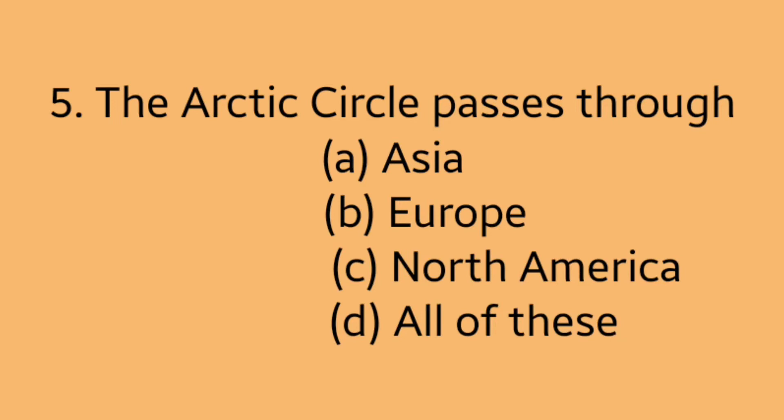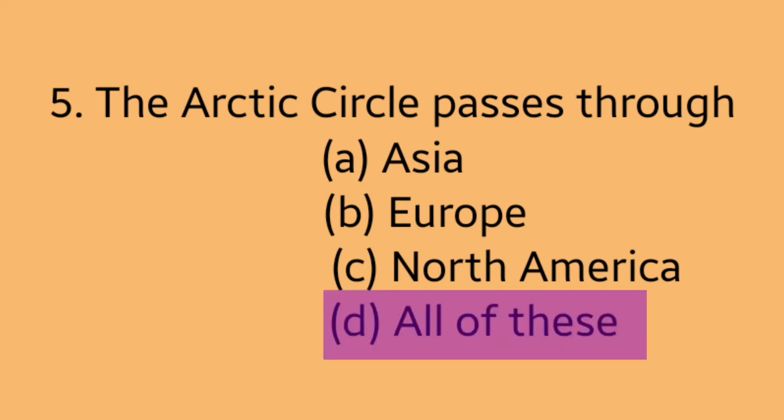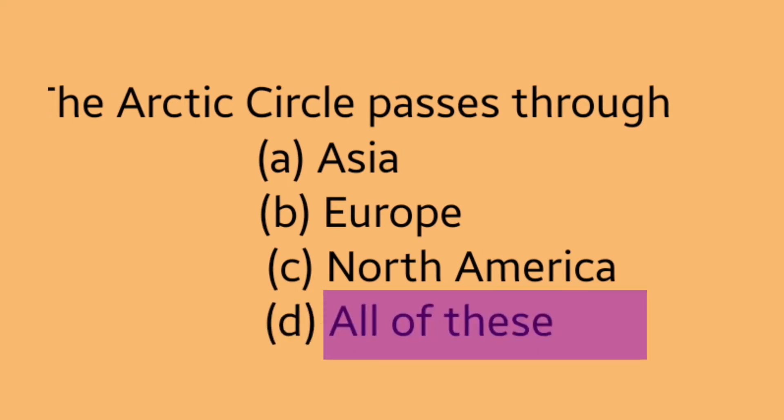Question 5: The Arctic Circle passes through? Option A: Asia. Option B: Europe. Option C: North America. Option D: all of these. Answer is Option D, all of these.